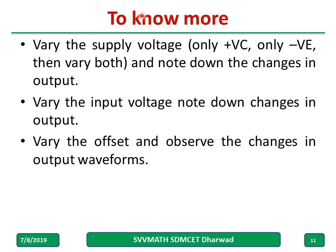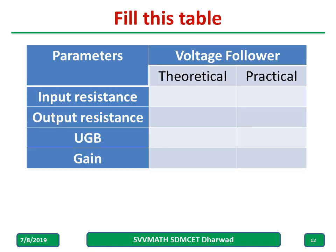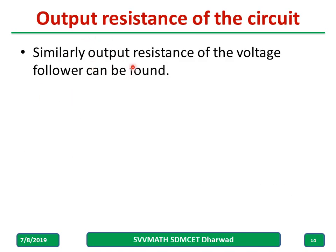To know more, vary the supply voltage: vary only the positive Vcc and observe the output change — increase and decrease it. Then reduce or increase only the minus Vcc and observe the output. Vary both and observe. Also vary the input voltage from 1V, 2V, 10V, 20V, and note the changes. Do not exceed more than the supply voltage. Vary the offset — give positive and negative offset along with the input voltage — and observe the changes in the output. Try to understand why it happens. You can also find the output resistance.